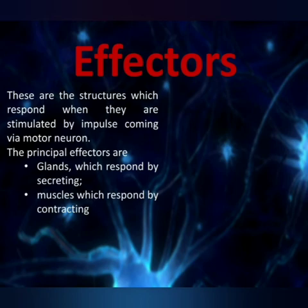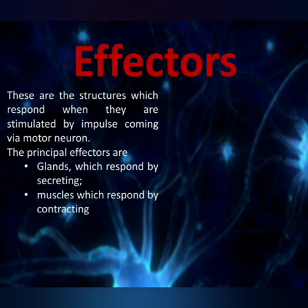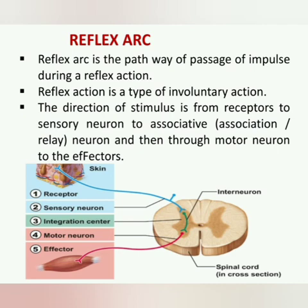The last component of the nervous system is effectors. These are structures that respond when stimulated by impulses coming via motor neurons. There are principally two types of effectors: glands, which secrete and show a response, and muscles, which contract and show a response. Next we study reflex arc — basically the pathway or passage of impulse during reflex action. Reflex action is an involuntary action where the stimulus direction goes from receptors through sensory neurons to associative neurons in the spinal cord, not reaching the brain. The spinal cord acts as the central nervous system, processes the signals, and motor neurons carry impulses back to effectors, which show the response.